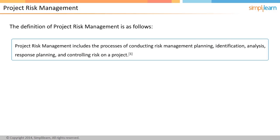Project Risk Management includes the processes of conducting risk management planning, identification, analysis, response planning, and controlling risk on a project. As mentioned in the Practice Standard for Project Risk Management, Project Risk Management aims to identify and prioritize risks in advance of their occurrence and provide action-oriented information to project managers.